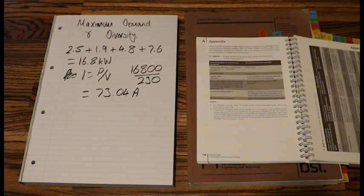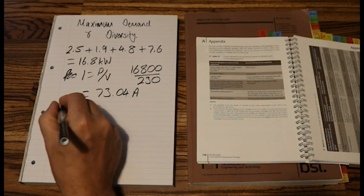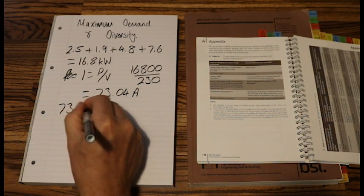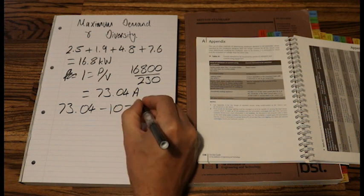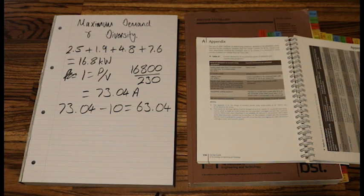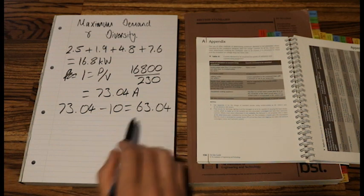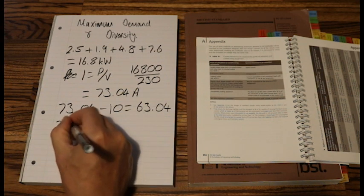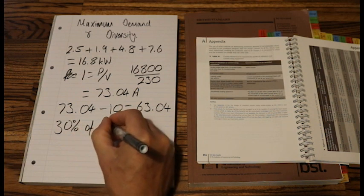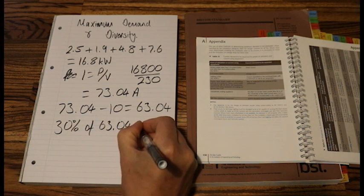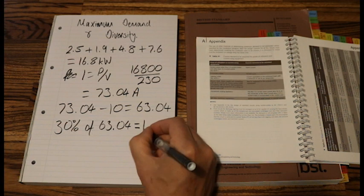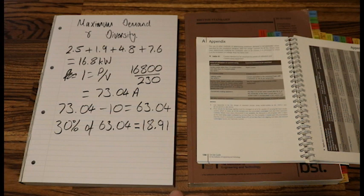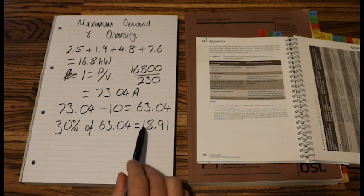Now we need to apply the diversity that table A1 set. So we take the first 10 amps, and we need to work out 30% of the remainder. So we've got to do 73.04 minus 10 equals 63.04. And we want to work out 30% of the remainder, so 30% of 63.04 equals 18.91.